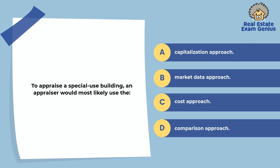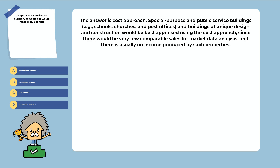To appraise a special use building, an appraiser would most likely use: the capitalization approach, market data approach, cost approach, or comparison approach. The answer is the cost approach. Special purpose and public service buildings of unique design and construction would be best appraised using the cost approach, since there would be very few comparable sales for market data analysis, and there is usually no income produced by such properties.